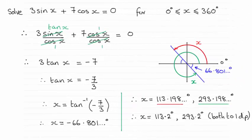Hi there. Now for this question we had to solve this equation in this range and you can see the answers to 1 decimal place are 113.2 degrees and 293.2 degrees. So I'll take you through this just in case there were any problems.